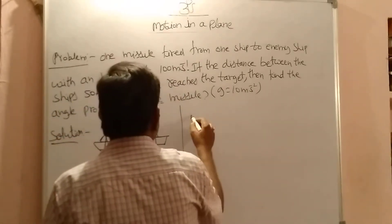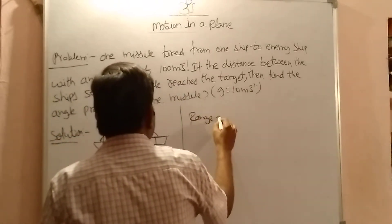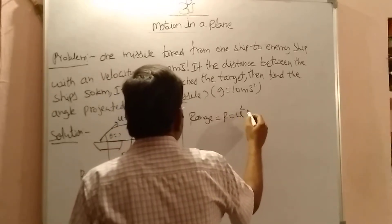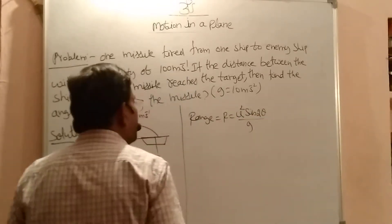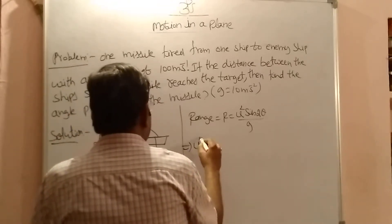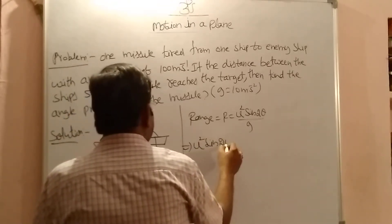Now what is the formula for range? Range equal to R. That is equal to u square sin 2 theta by g. So range is u square sin 2 theta by g.